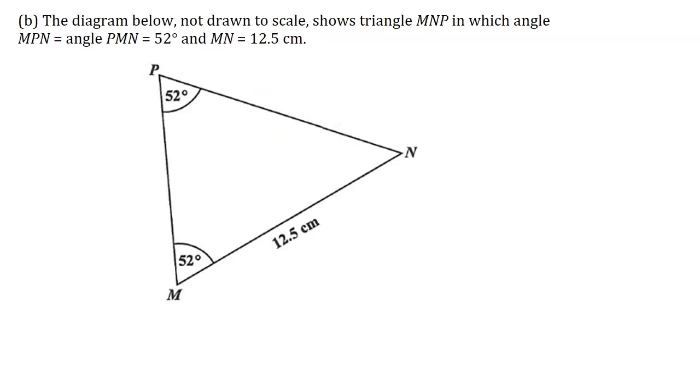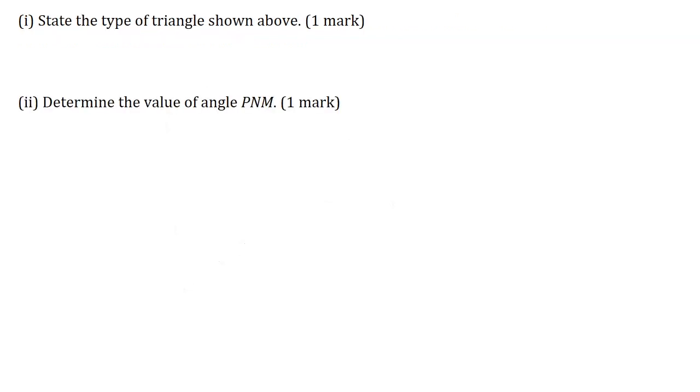Part B. The diagram below not drawn to scale shows triangle MNP in which angle MPN equals angle PMN which equals 52 degrees, and MN equals 12.5 centimeters. Part 1. State the type of triangle shown above for one mark.